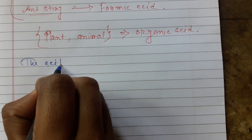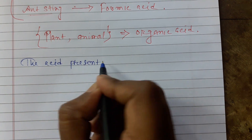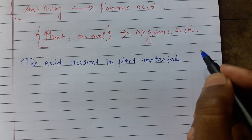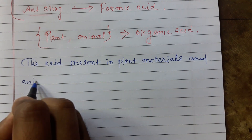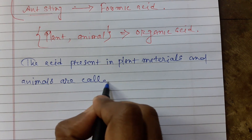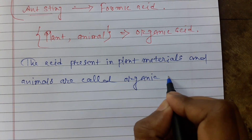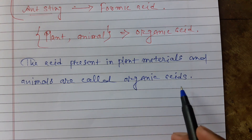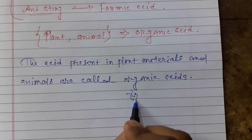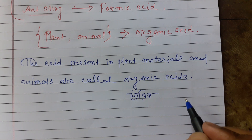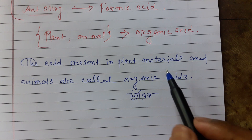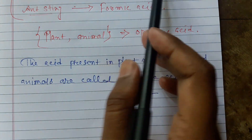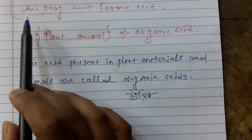The acid present in plant material and animals are called organic acids. The acid present in plant material is called zoibic acid. Citric acid — lemon, orange. Acetic acid — vinegar. Tartaric acid — tetele. Formic acid — and there are a lot of sources that exist.